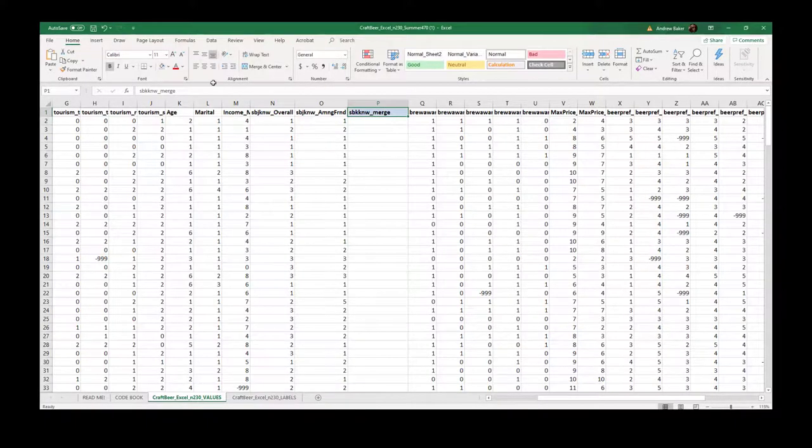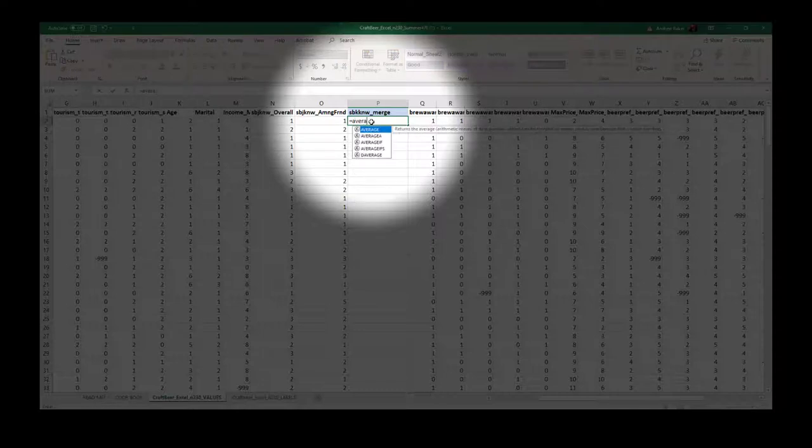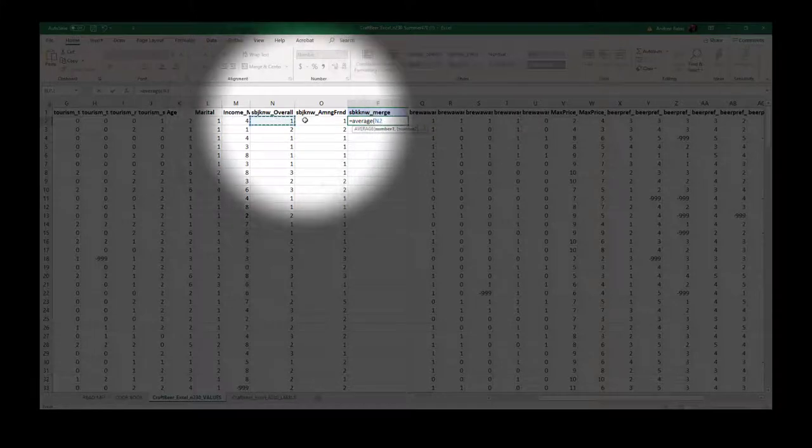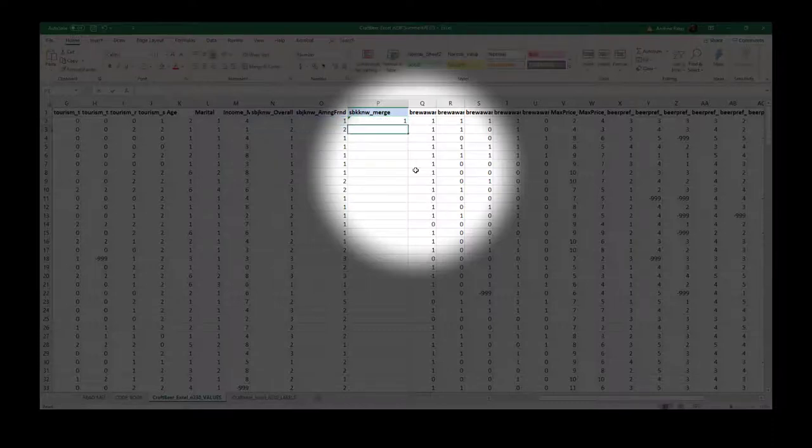I'll simply just take the average function here, and since they're right next to each other we can just select them together. We could use commas if they're located in different places. And away we go.